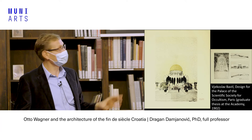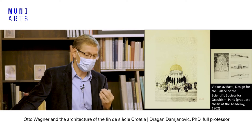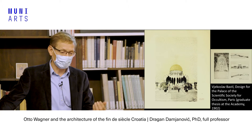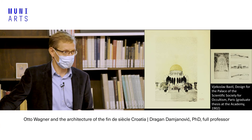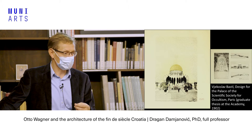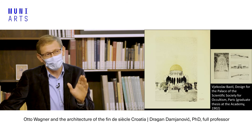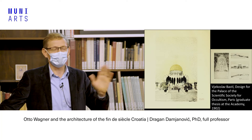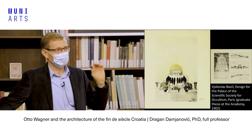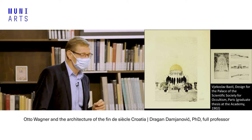Bastl published a journal on occultism called Novo Sunce (New Sun) when he returned to Zagreb. According to his family, he made horoscopes for all members of his family and friends, and even predicted when he would die — missing by only three or four days; he died in 1947. For his Occultism Palace project, he envisaged an underground garage for cars in 1902 — a really unusual thing at the time. He was also heavily inspired by the Secession building in Vienna, as you can clearly notice.